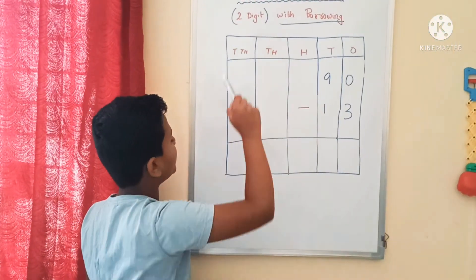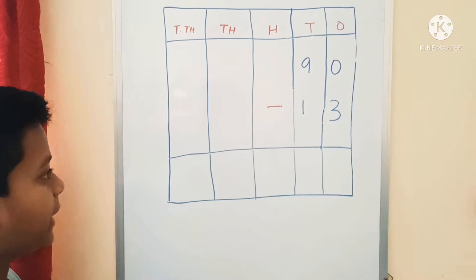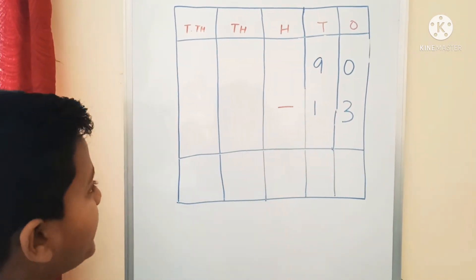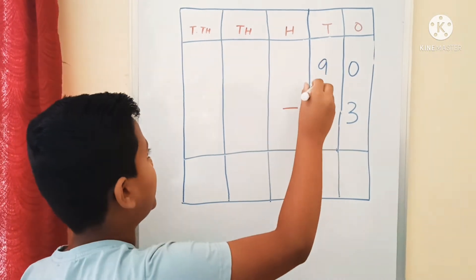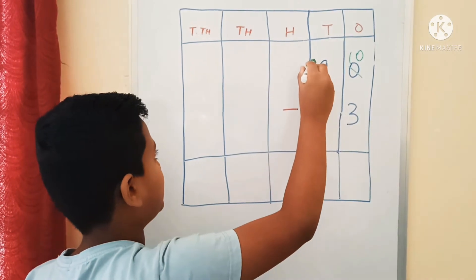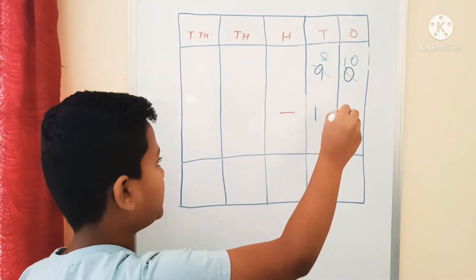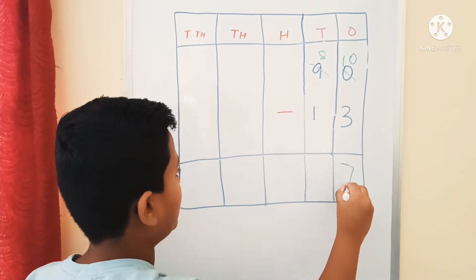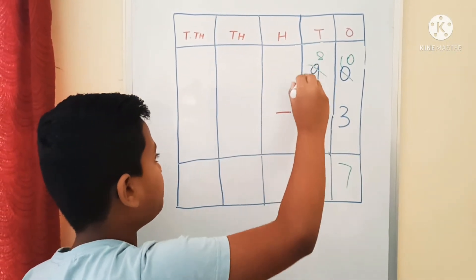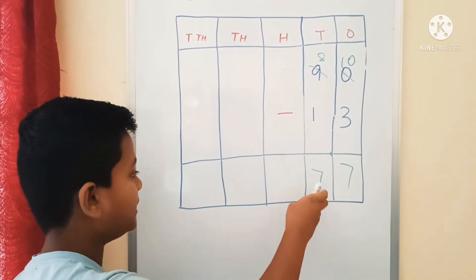Let's start with 2-digit subtraction. 90 minus 30. We cannot subtract 3 from 0, so we will go to the 10th place. We have a 9 there. We will borrow 1 tenth from the 10th place. Now, this 9 is 8 after borrowing. 10 minus 3 is equal to 7. We go to the 10th place: 8 minus 1 is 7. Our answer is 77.